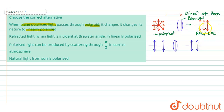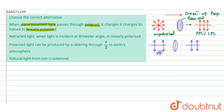Statement one says that when plane polarized light passes through a polaroid, it changes its nature to linearly polarized. This is false — plane polarized and linearly polarized light are the same thing. When plane polarized light passes through a polaroid, it remains plane polarized or linearly polarized; only the intensity will change. So this statement is incorrect.